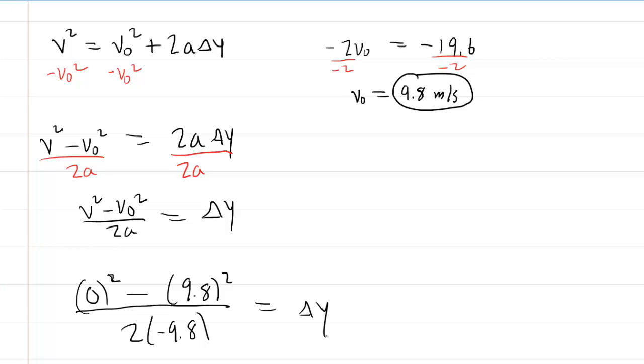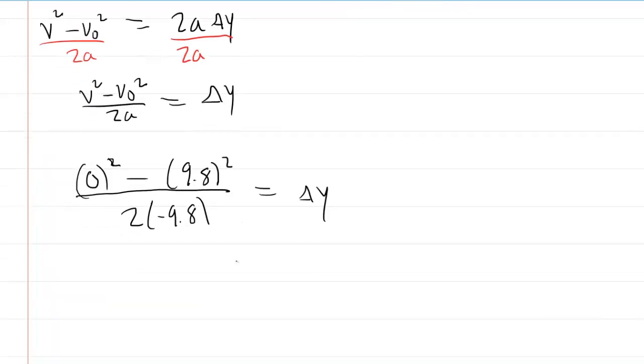When you do that, you get 4.9. So 4.9. Now we calculated a vertical displacement so the unit would work out to be in meters. So this would be the correct answer for the maximum height of the ball.